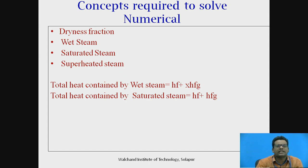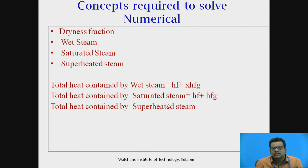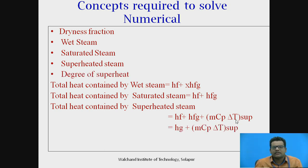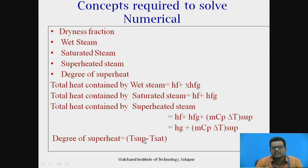For superheated steam, you are heating the steam above the saturated condition. The formula is: total heat equals Hf plus Hfg (also written as Hg) plus M·Cp·ΔT(superheated), where Cp is the specific heat of steam and ΔT is the degree of superheat, calculated as T(superheated) minus the saturation temperature at the given pressure. These formulas are required to solve the numericals.